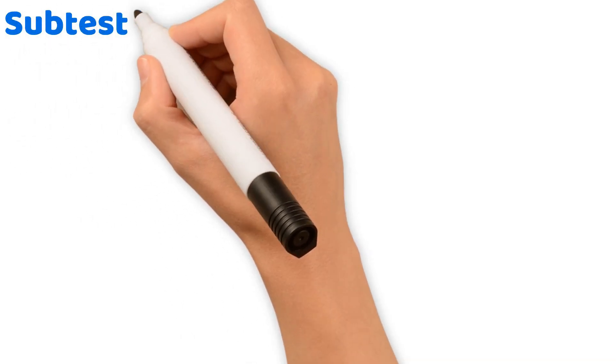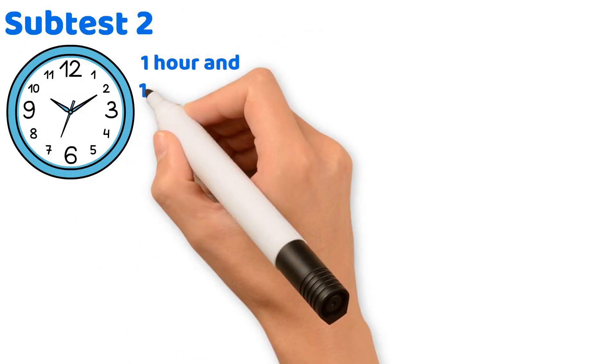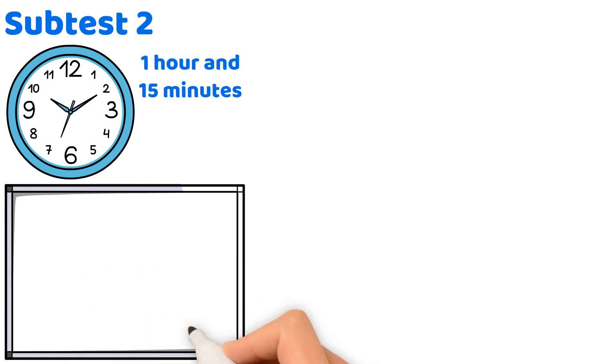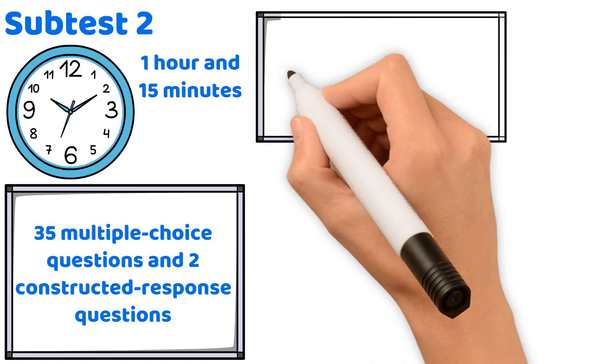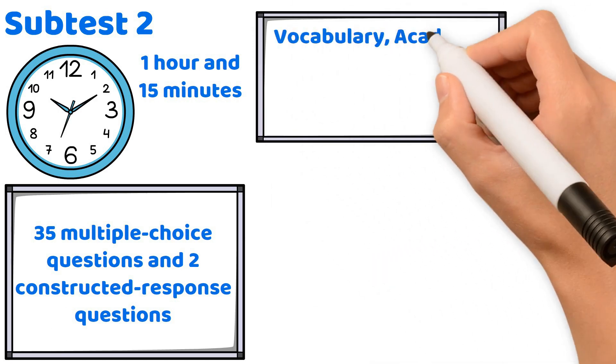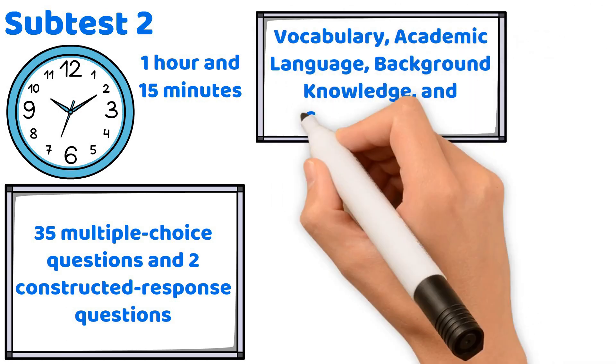Next is Subtest 2, where you will also get 1 hour and 15 minutes to complete this subtest, facing 35 multiple-choice questions and 2 constructed-response questions. This subtest covers vocabulary, academic language, background knowledge, and comprehension.